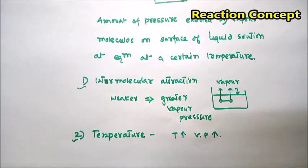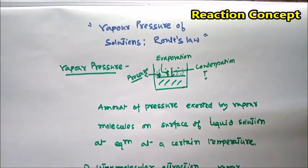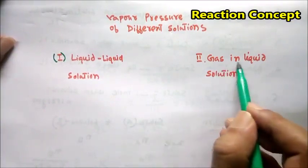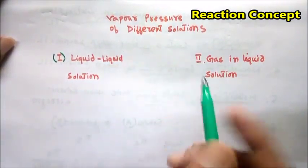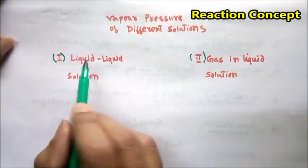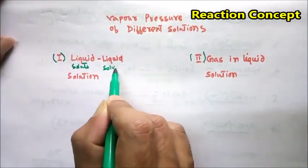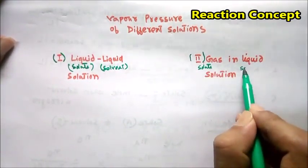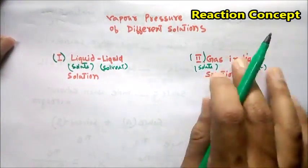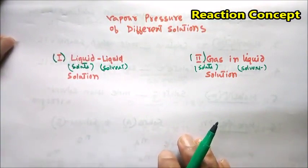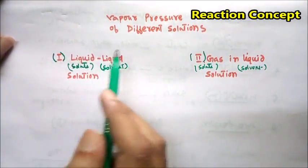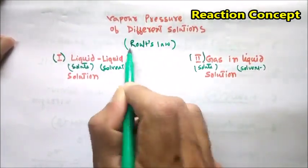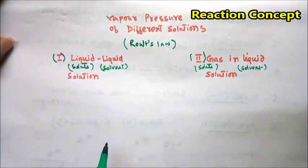Now I will discuss about the vapor pressure of different solutions. The first is a liquid-liquid solution, and the other is a gas-liquid solution. Only these two types will be considered here. In both these cases we will discuss a law for vapor pressure — that is Raoult's law. Let us consider the first one, the liquid-liquid solution.